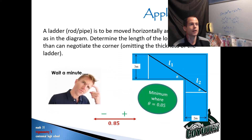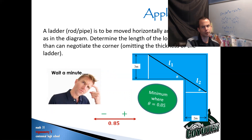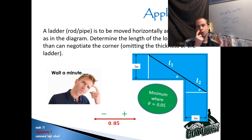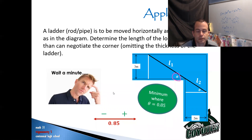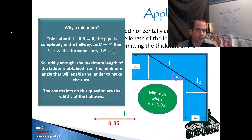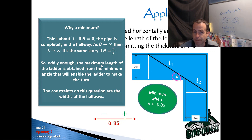That tells me I'm going from decreasing to increasing, which means I'm finding a minimum where theta equals 0.85. You may be scratching your head because originally I was looking for the longest ladder — the maximum. So how come my work gave me a minimum? The short answer is: you're no longer looking at the length of the ladder, you're looking at the angle theta. When theta is at its minimum possible value, the length of the ladder will be its longest.